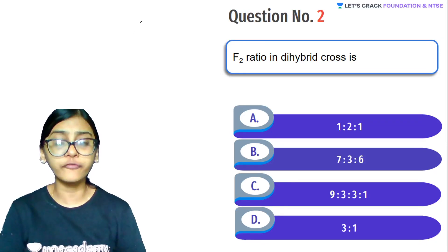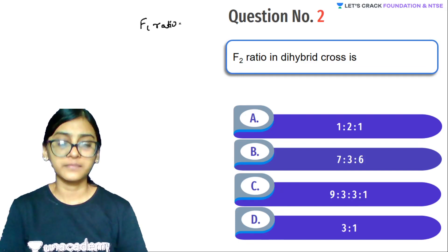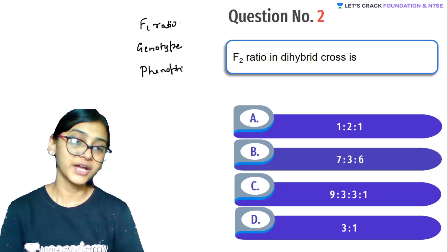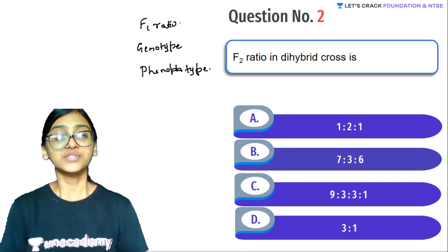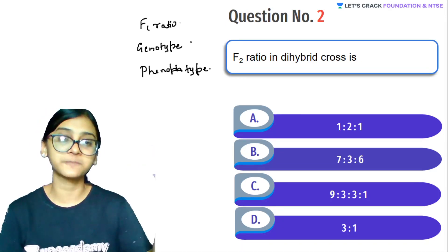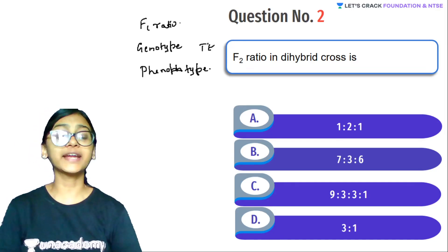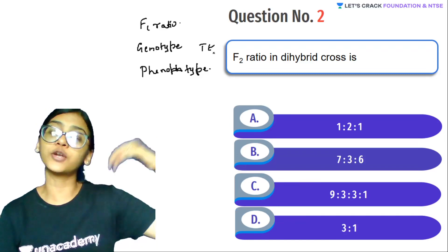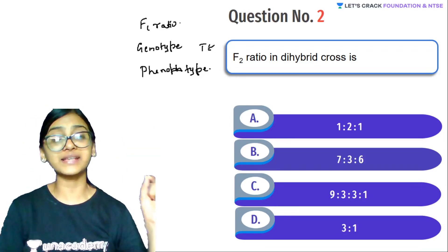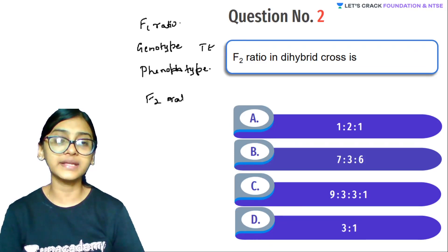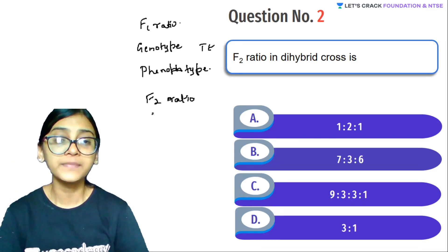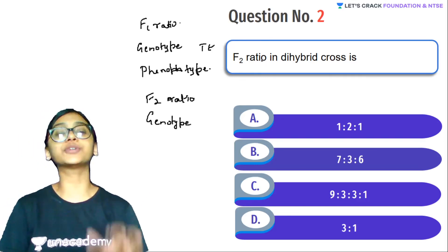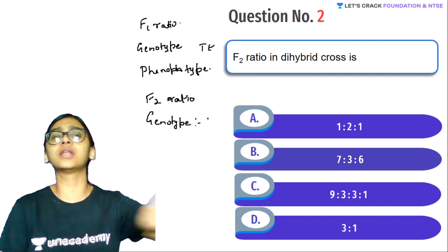Next question: F2 ratio in dihybrid crosses. We need to know genotype and phenotype ratios. For the F1 generation, there is no ratio at all because we get to see all tall individuals. So genotype and phenotype of F1 generation — the answer is simply all tall. For the F2 generation, the genotypic ratio for monohybrid is 1:2:1. For dihybrid, the genotypic ratio is very long and not given in NCERT.